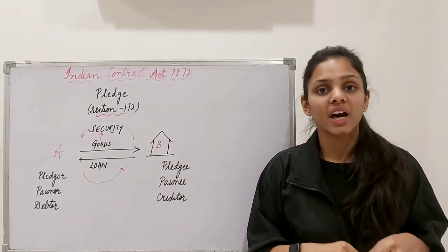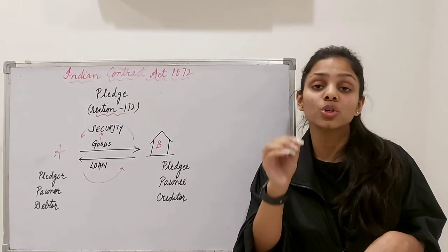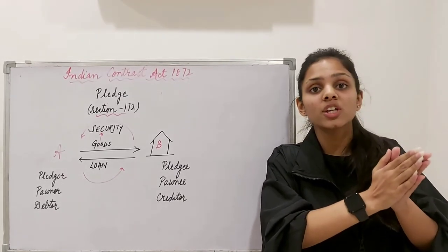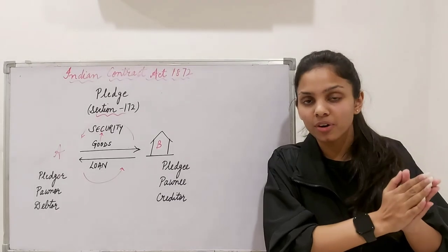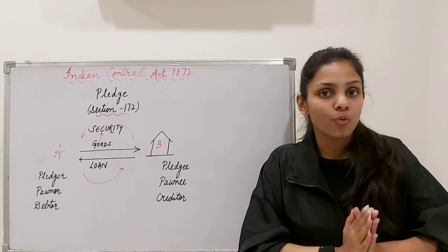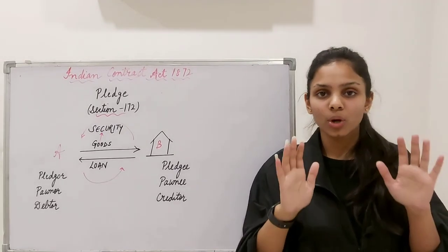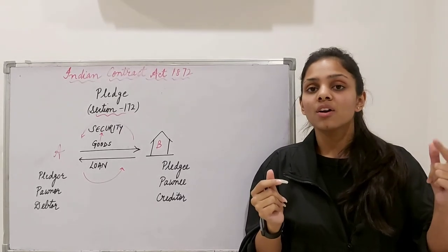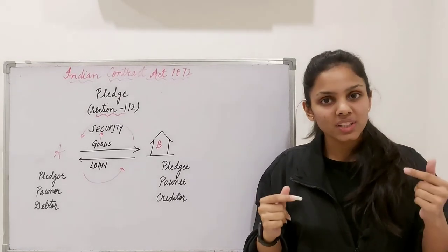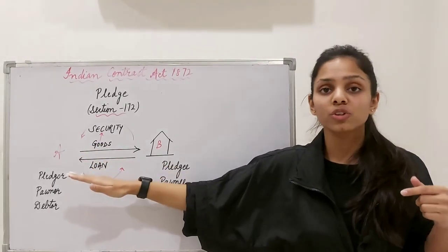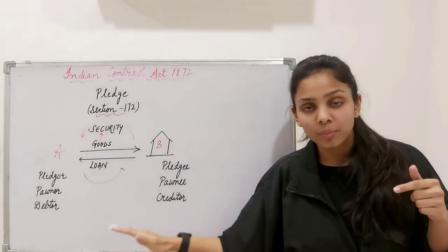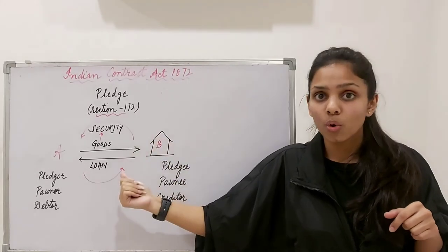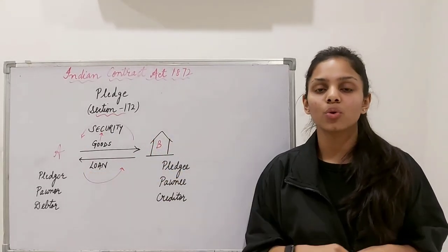If you remember, in Contract of Guarantee, I told you that contract of guarantee or suretorship is not invoked right away — it is invoked as soon as the principal debtor fails to perform his part of obligation, as soon as he makes a default. Similarly, as soon as the pledger or pawnor fails to perform his part of obligation — which is nothing but repayment of debt or performance of a promise — the pledgee's remedies will be invoked. He can either retain those goods or sell those goods after giving reasonable notice to the pledger.